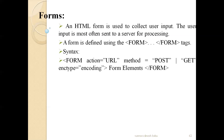The form tag has three main attributes: action, method, and enctype. For action, you supply a URL. For method, you can use either POST — which sends information — or GET, which retrieves information. Enctype is for encoding. In this class we'll focus on how to create the different elements inside the form using HTML.